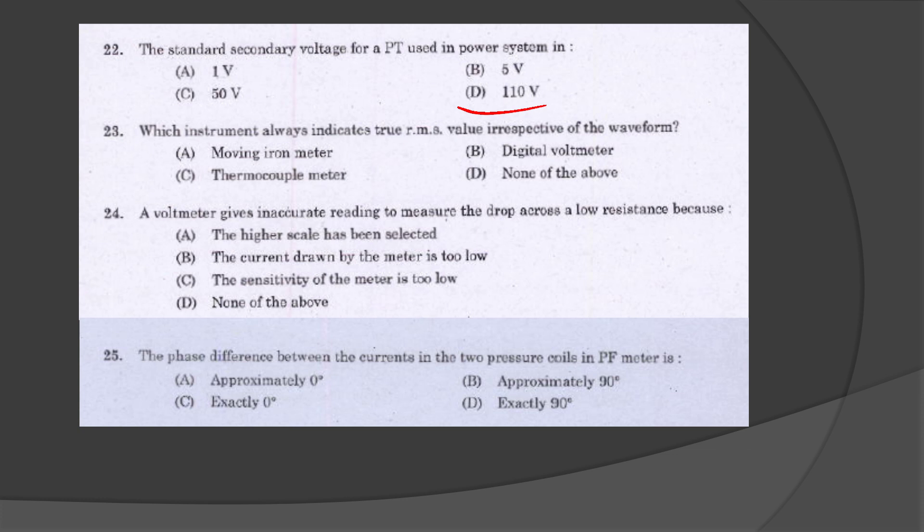Which instrument always indicates the true RMS value respective of the waveform? It is thermocouple meter. A voltmeter gives inaccurate reading to measure the drop across a lower resistance because of the sensitivity of the meter. The phase difference between the current and the two pressure coils in power factor meter is exactly 90 degree.